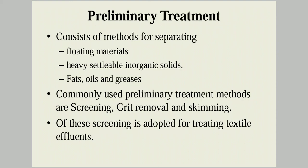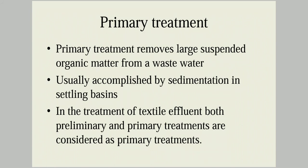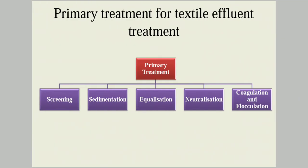Primary treatment for textile effluent is used to remove the large suspended organic matters present in wastewater. It is usually accomplished by the sedimentation method in settling basins. In treatment of textile effluent, both preliminary and primary treatments are considered as primary treatment. The steps followed are: first screening, then sedimentation, followed by equalization, then neutralization, and finally coagulation and flocculation.